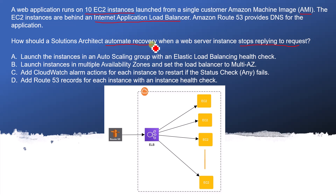Option A: Launch the instances in an auto scaling group with an elastic load balancing health check. Elastic load balancing is useful for health checks, and with an auto scaling group, if one instance is not responding properly, we can spin up another EC2 instance. It will be up, running, and configured with the ELB so new requests are directed to the newly spun-up instance. This is the correct answer.